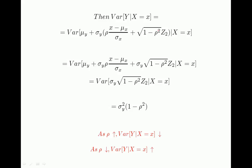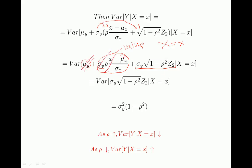We substitute this expression for Z1, and now compute the variance of the resulting expression conditional on X. We open the brackets by multiplying both terms by sigma_y. Notice that this term is constant — it's just a number — and this term is also constant, because small x is just a value. Only the term containing Z2 is a random variable. Since the variance of a constant is zero, we can get rid of those terms, and we're left with just the variance of the Z2 expression, conditional on X.